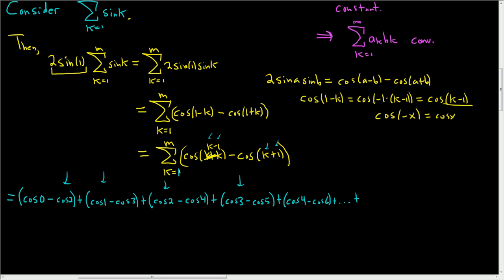I found it better to plug in M − 1 and M separately. For k = M − 1: cos(M − 2) − cos(M). And for the last term, k = M: cos(M − 1) − cos(M + 1).